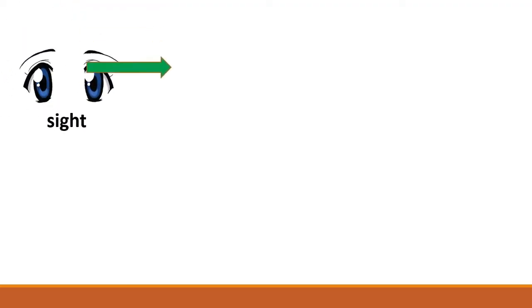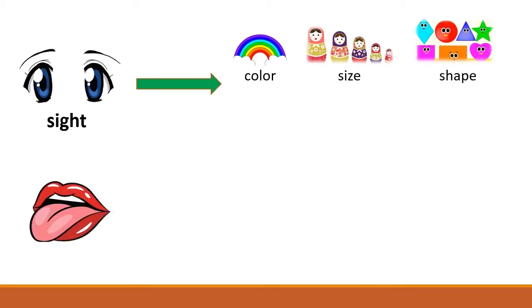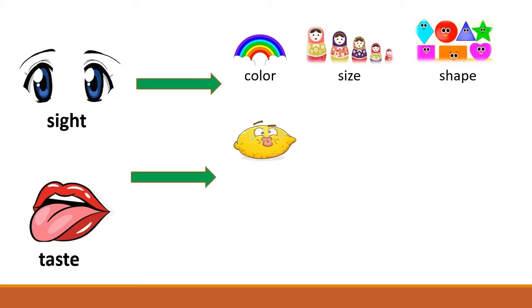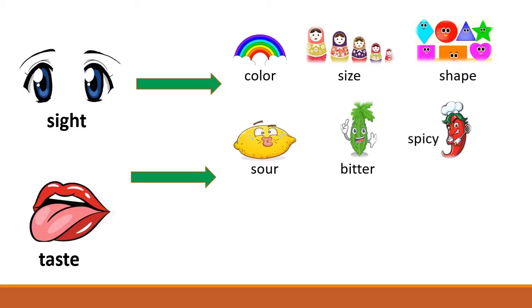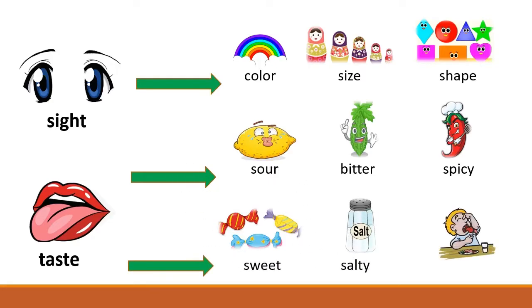First, your sense of sight can identify color, size, and shape. Next, your sense of taste can identify sour, bitter, spicy, sweet, salty, and pungent.